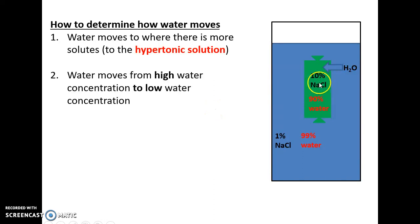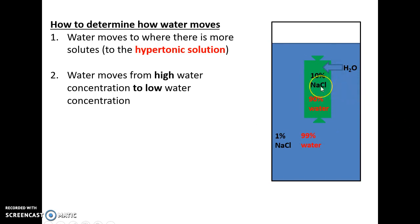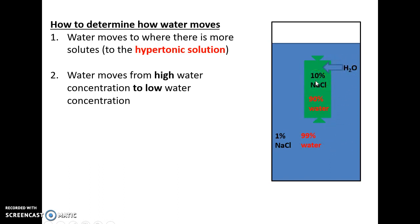Here's another example. We have a dialysis bag with 10% sodium chloride solution in a beaker filled with 1% sodium chloride solution. The solution outside in the beaker compared to inside is hypotonic; the solution inside the dialysis tubing compared to outside is hypertonic. So water is going to move into the bag, going from high concentration of water to low concentration of water, or going toward the hypertonic solution — going toward where there is more stuff dissolved.